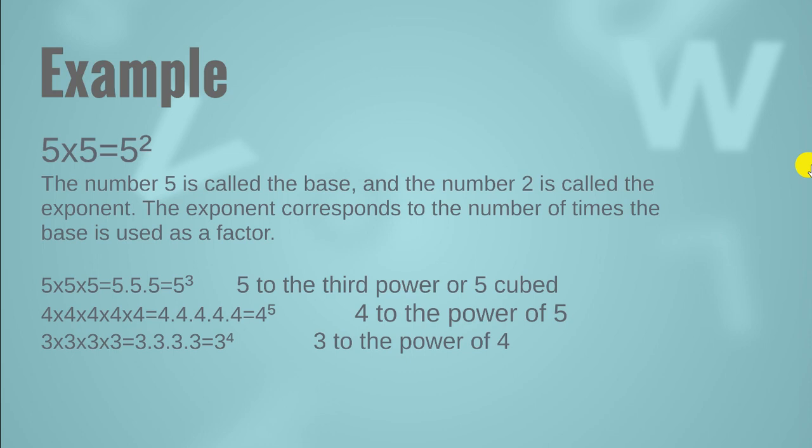Here in the next example, you can see that we are multiplying 5 by itself three times. So we are going to write it as 5 to the third power, or 5 cubed. We write it as 5 raised to the power 3 and we call it 5 raised to the power 3, or we call it 5 cubed.